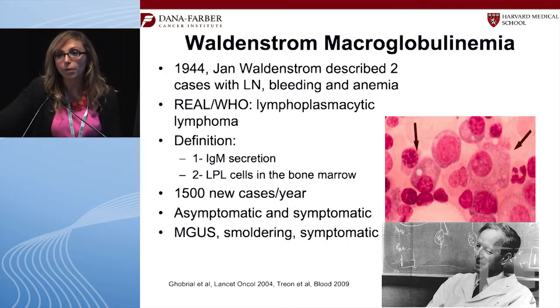We know that this is a lymphoplasmacytic lymphoma with two characteristics: the presence of lymphoplasmacytic cells in the bone marrow and the presence of an IgM protein in the blood. Soon enough, we will likely need to add one more characteristic — the MYD88 mutation — which I will talk about in the next few slides, and which will definitely help characterize patients with Waldenström macroglobulinemia.